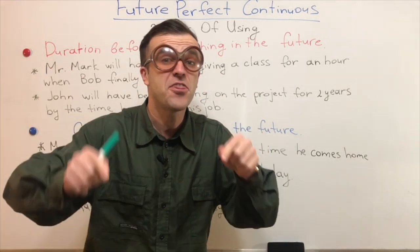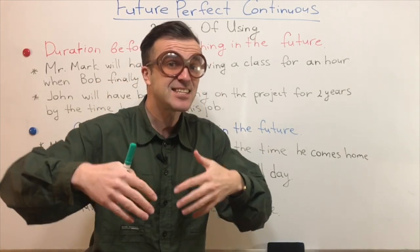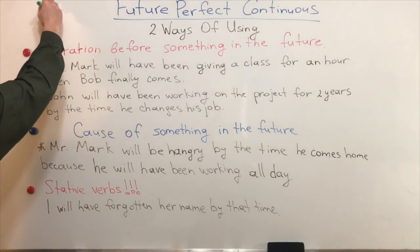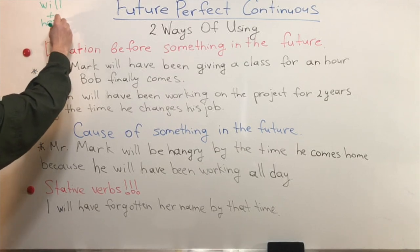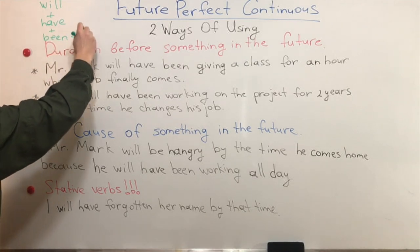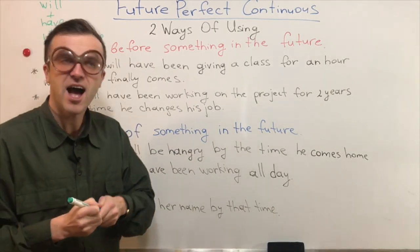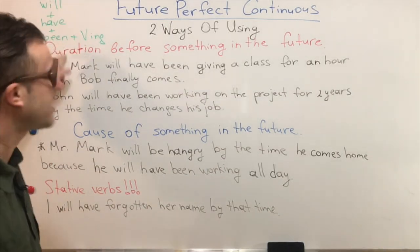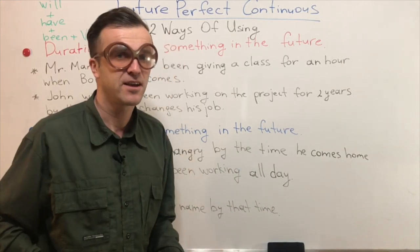The Future Perfect Continuous has the formula: Will + Have + Been + a verb + -ing. Don't forget about the person: I, We, You, They, He, She — plus Will + Have + Been + Verb + -ing.